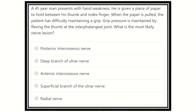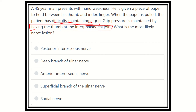From this question, the key points are: when the paper is pulled, the patient has difficulty maintaining the grip, and the grip pressure is maintained by flexing the thumb at the interphalangeal joint. So the normal pinching movement — the normal grip between the index finger and thumb — is lost.